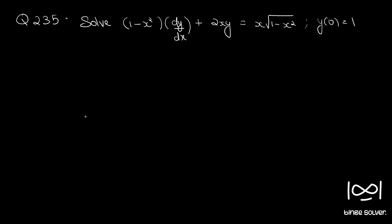Question 235: Solve (1 minus x squared) times dy/dx plus 2xy equals x times the square root of (1 minus x squared), given that y(0) equals 1.